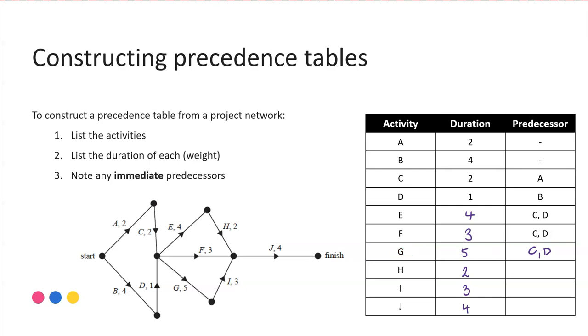If we now look at H, we can see for activity H, E ends just prior, so E is our predecessor for H. For activity I, we can see G is the predecessor. And then finally for activity J, we have H, F, and I all coming into finish at that vertex where J commences. So F, H, and I, normally we would put those in alphabetical order, but it's not a requirement as long as the correct activities are listed.